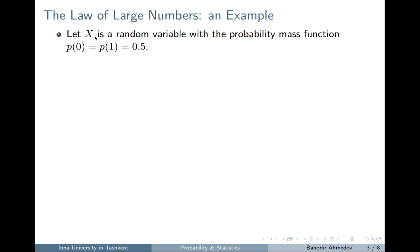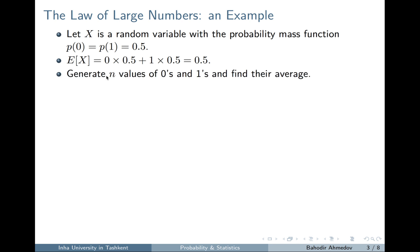To illustrate this theorem, let's take a random variable X which is going to take either 0 or 1 with the same probability 0.5. Theoretically it has an expected value equal to 0.5. In order to show the law of large numbers, I'm going to generate n random values of 0s and 1s, find their mean by adding all the numbers and dividing by n. The law of large numbers tells me that this number is close to 0.5 most of the time if I increase n.